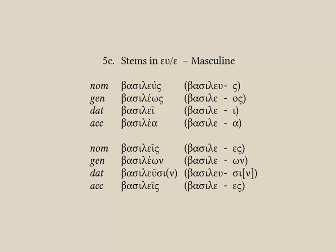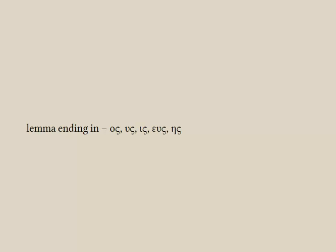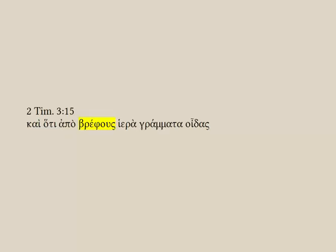The other bit of information you need when reading is getting back to the lemma. The easiest way is to memorize the nominative singular endings these words can take. I recommend that you memorize os, us, is, eis, ace. Two of these endings — the us and the ace — we haven't met yet; they'll be on 3rd declension adjectives in the next video. So when you think you're dealing with a 3rd declension form with stem shifts and vowel contraction, look in the lexicon under the stem with these endings on it, and you should have no trouble spotting the correct word.